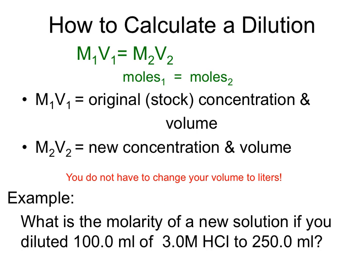To calculate a dilution, we use the equation M1V1 = M2V2. In a dilution, the moles of the solute always stay the same — we're just changing the volume of the solution by adding more solvent, so moles 1 equals moles 2. The 1s and 2s reference the original stock concentration and volume versus the new concentration and volume. Unlike the molarity equation where volume must be in liters, because moles always stays the same, we can keep our volume in milliliters during this calculation.